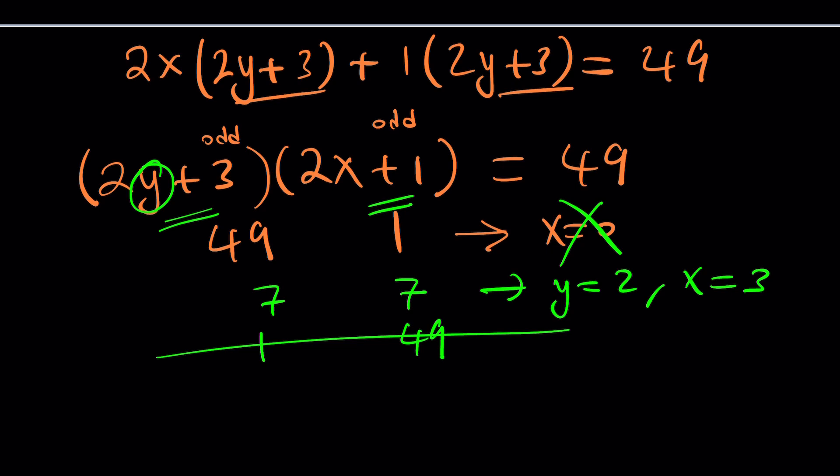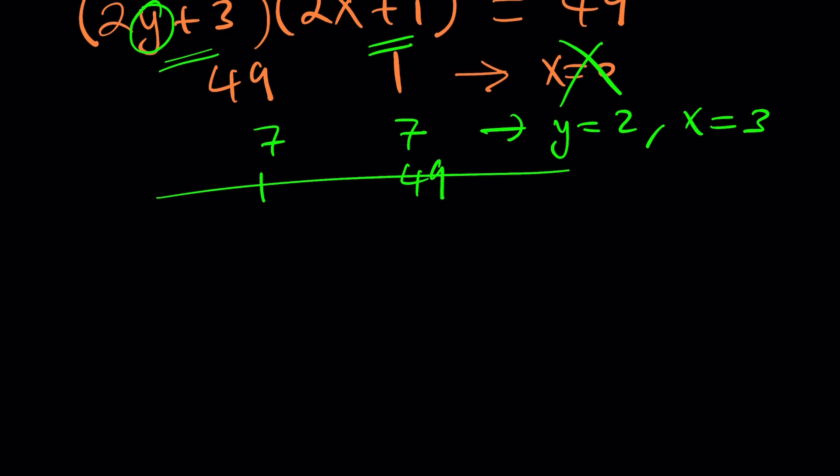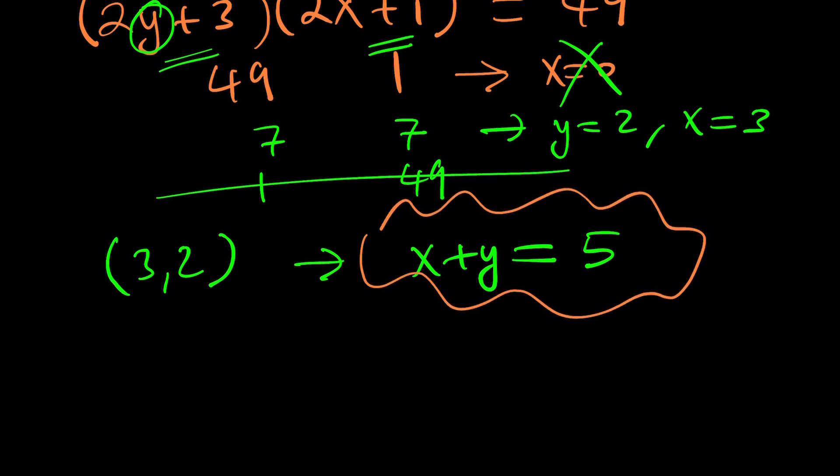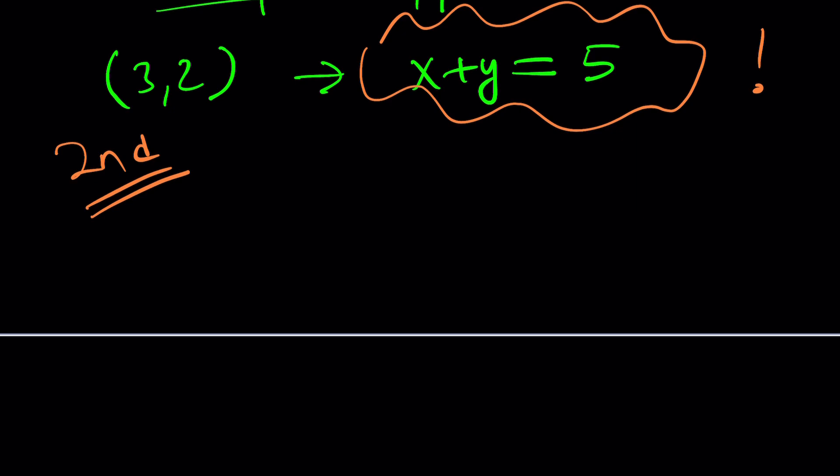And this is really cool. You know why? Because we have a unique solution. And remember, we're looking for x + y, which gives us a unique answer. So if 3, 2 is a solution, then x + y is equal to 5. Isn't that cool? Great. This doesn't bring us to the end. So stick around. We have the second method. I think you're going to like the second method, but I could be biased. So let me know what you think. I'd like to hear your thoughts.